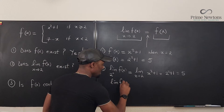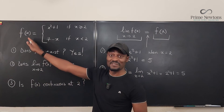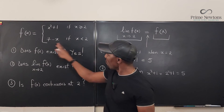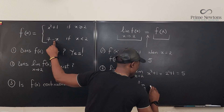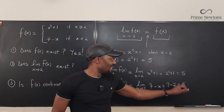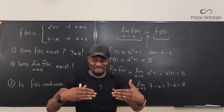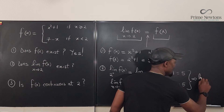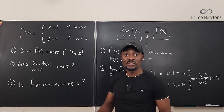Now we find the limit as x approaches 2 from the left — using numbers less than 2. For values less than 2, you must use the other piece of the function, which is 7 − x. So the left-hand limit equals the limit as x approaches 2 of 7 − x = 7 − 2 = 5. Both the right-hand and left-hand limits equal 5, so the limit of f(x) as x approaches 2 exists and equals 5.